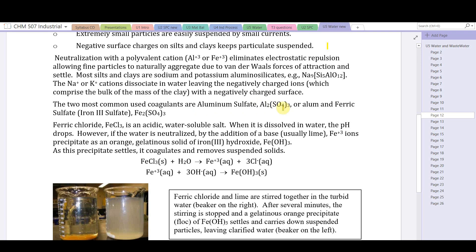The two most common coagulants are aluminum sulfate or alum, and ferric chloride or ferric sulfate. Ferric chloride, FeCl₃, is an acidic water-soluble salt. When it dissolves in water the pH drops. However, if the water is neutralized by the addition of a base such as lime, ferric ions precipitate as an orange gelatinous solid called iron three hydroxide, Fe(OH)₃.